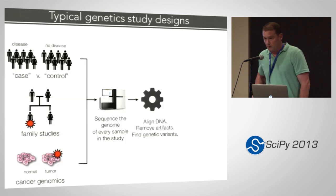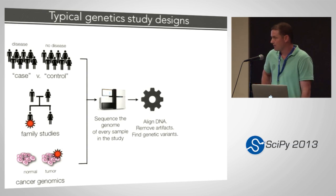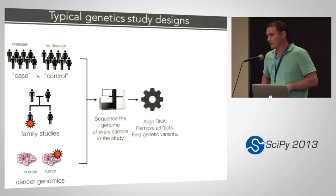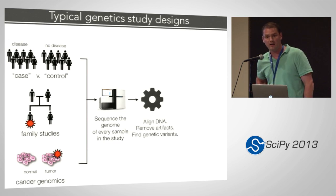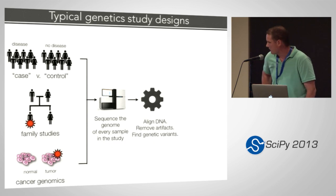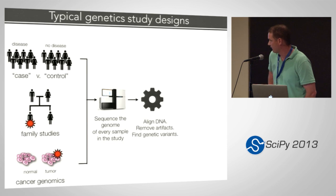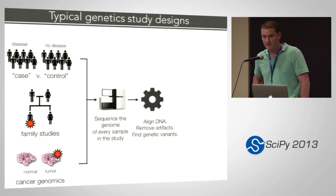Studies of genetic variation basically follow the same basic pipeline, whether you're doing case-control analysis — sequencing people with a disease trait as cases and people without as controls, and essentially doing a fancy diff on their genomes to figure out statistically what the risk variants are — or family-based studies, or cancer genomics, where you're sequencing tumor genomes and matched normal tissue from the same patient. Different study designs, but effectively the same process.